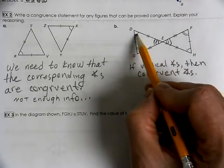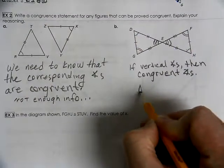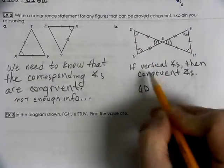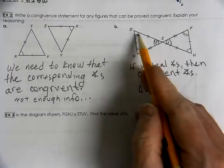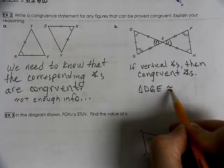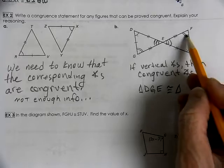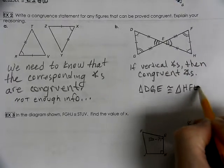So, I know for certain that that angle is congruent to that angle. Now, I have all these corresponding parts. We can give a congruent statement. Triangle D, G, E. One ticker, two ticker, three ticker for the angles. It is congruent to triangle one ticker, two ticker, three ticker. H, G, E.